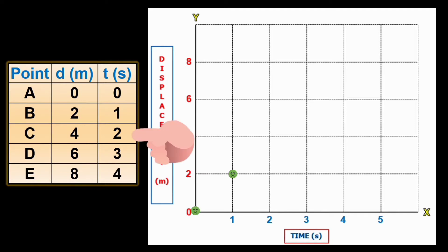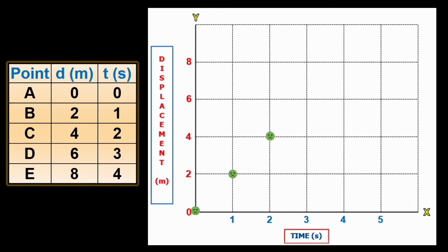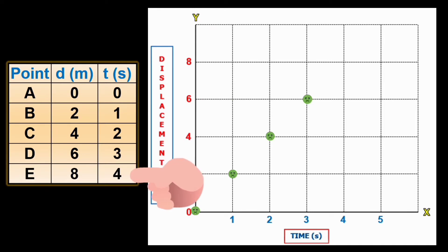Same goes with point C, where T is 2 seconds and D is 4 meters. Plot the point where these two intersect, and here it is. Then at T equal to 3 seconds, the distance covered from the origin is 6 meters, and that makes these lines intersect here. Finally, after 4 seconds, the object is now at 8 meters distance from the origin, so we plot the point here.